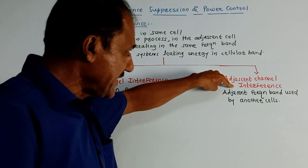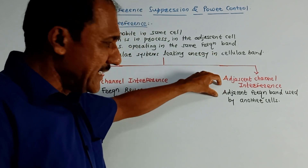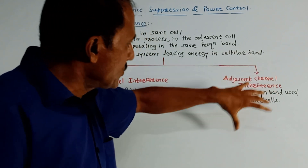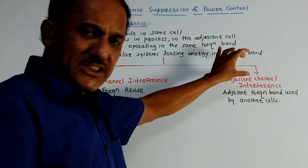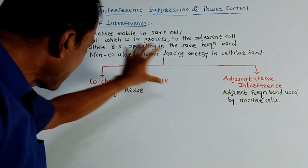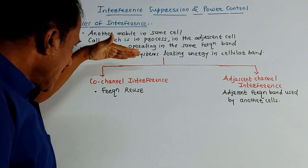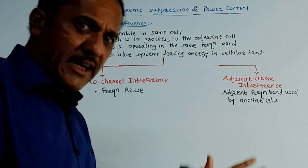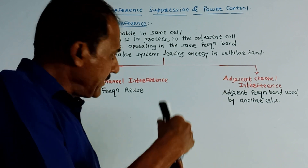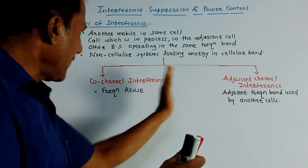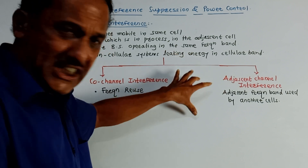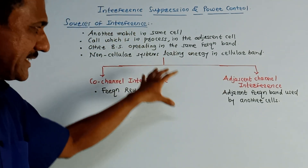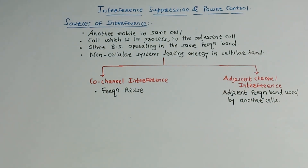The second type is adjacent channel interference, which is caused by an adjacent frequency band used by another cell. I have already uploaded a video in earlier sessions related to frequency reuse, co-channel interference, and adjacent channel interference — please watch that video for a detailed discussion. This covers the sources and types of interference in the cellular system.